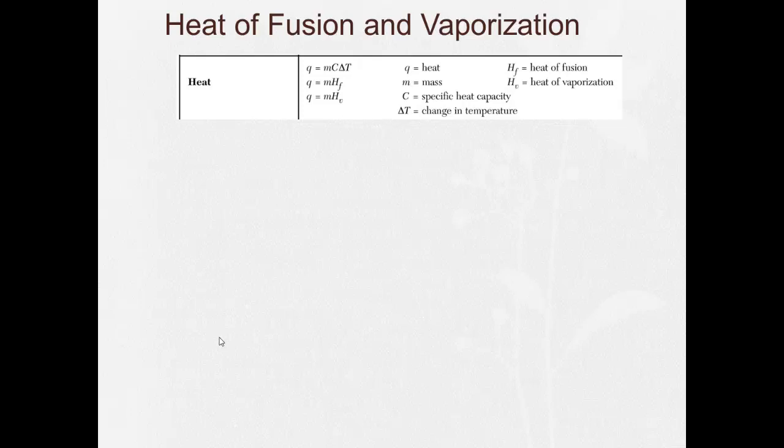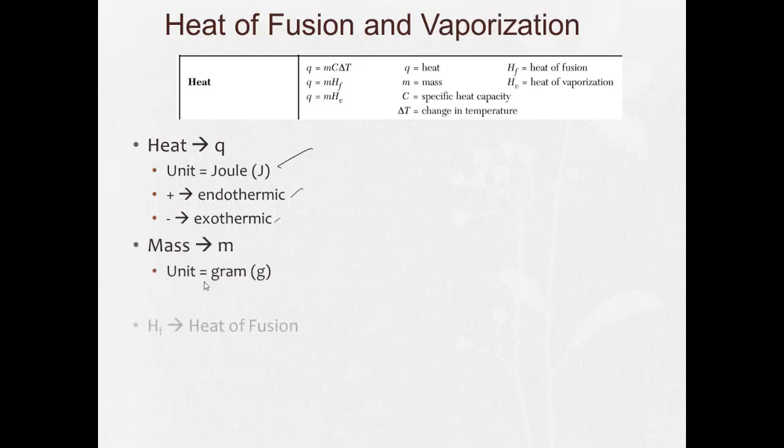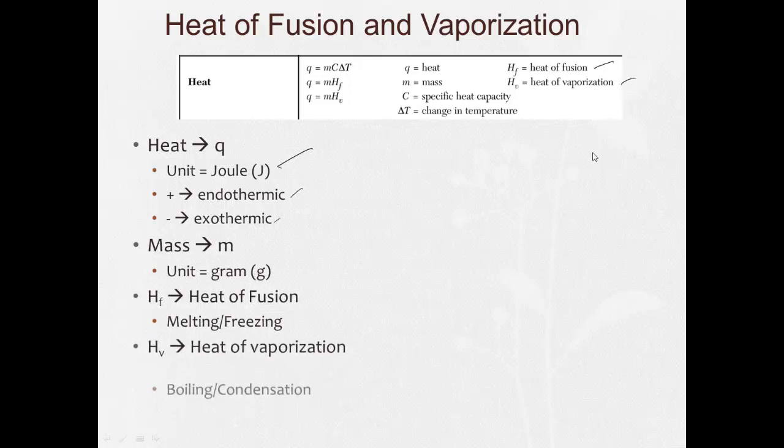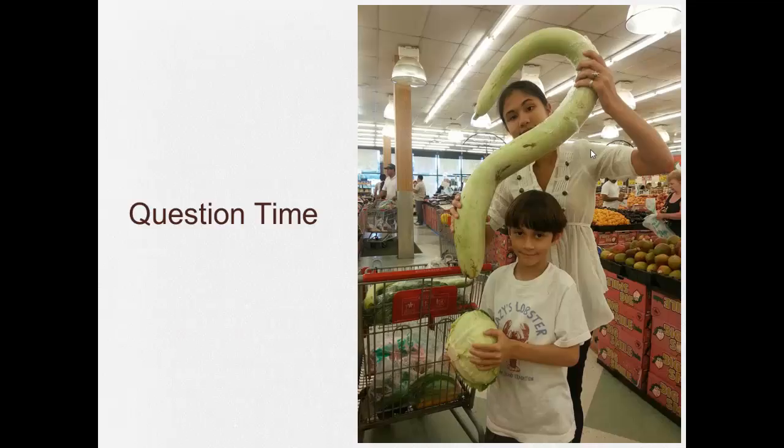So now heat of fusion and heat of vaporization, just a little bit different. It's still, the unit is still joules. It's positive when it's endothermic, negative when it's exothermic. Mass is the same. HF is the heat of fusion, just like it says here, used for melting and freezing. HV is heat of vaporization, just like it says here, used for boiling and condensation.